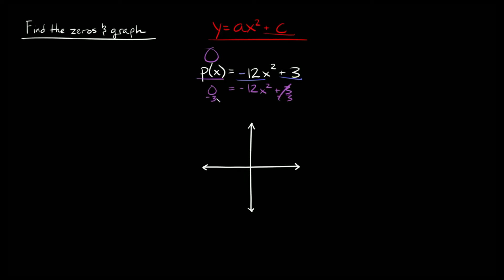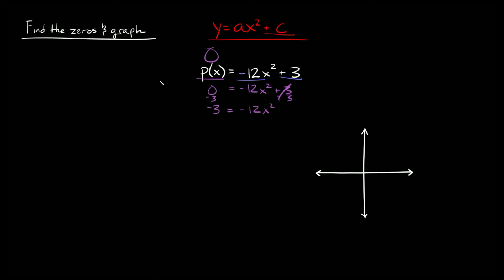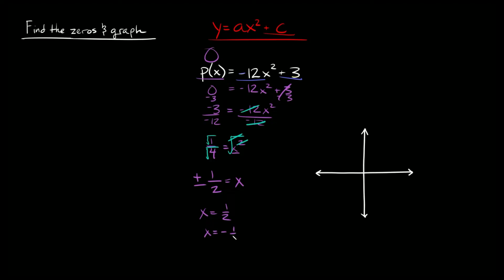Set 0 equal to negative 12x squared plus 3. Subtract 3 from both sides to get negative 3 equals negative 12x squared. Divide both sides by negative 12 — negative 3 divided by negative 12 is positive 3 over 12, which reduces to 1 over 4. So 1 over 4 equals x squared. Take the square root of both sides: the square root of 1 is 1, and the square root of 4 is 2, giving x equals plus or minus 1 half. So x equals positive 1 half and x equals negative 1 half — these are where the graph crosses the x-axis.